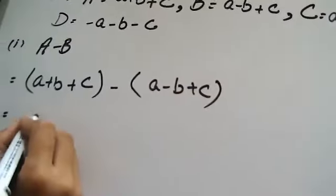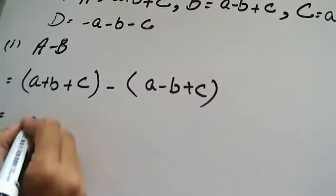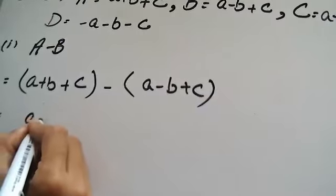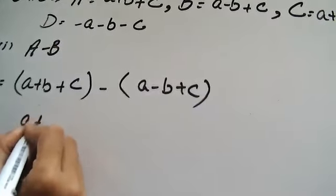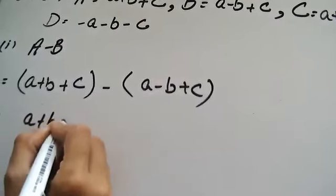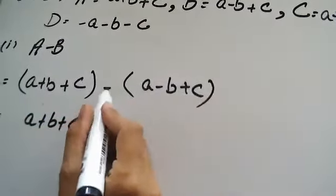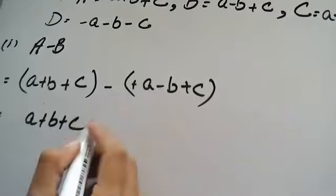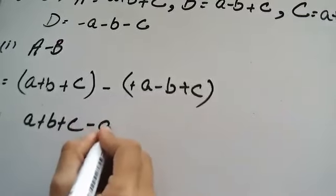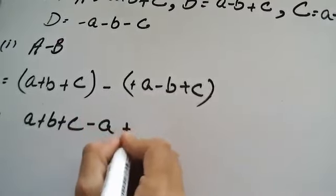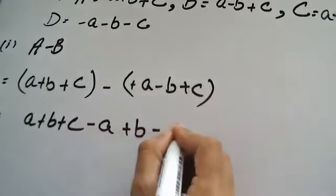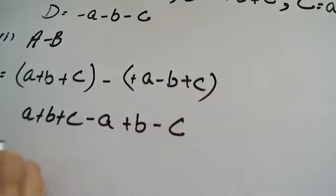So these are 4 values. The next step is to remove the brackets. Where you have a minus sign, you have to multiply: plus times minus gives minus, minus times minus gives plus. So you get minus A plus B and minus C.